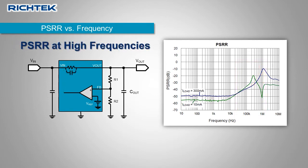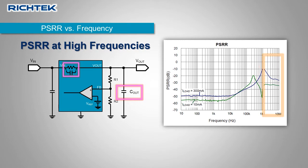Above the unity gain frequency, the LDO is not able to actively remove ripple. The ripple attenuation at these very high frequencies is mostly caused by the LDO output capacitor and the LDO internal parasitic impedance. Due to the lower impedance of the pass element at higher loads, the high frequency attenuation is normally worse at higher loads.